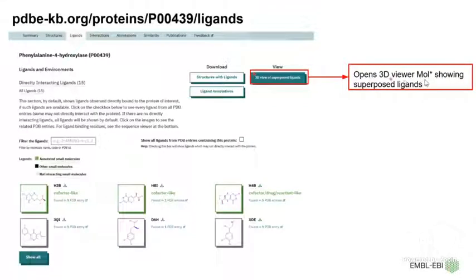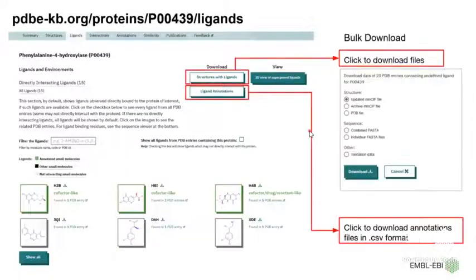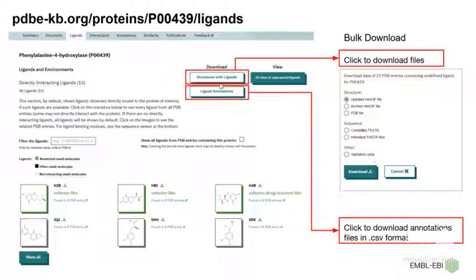The 3D viewer shows you the superposed ligands as discussed in the summary section, and the same view is accessible here. You can download the structural data — specifically only the structures which are ligand-bound. All the ligand-related annotations visible in the Protvista viewer can also be downloaded using the download button.